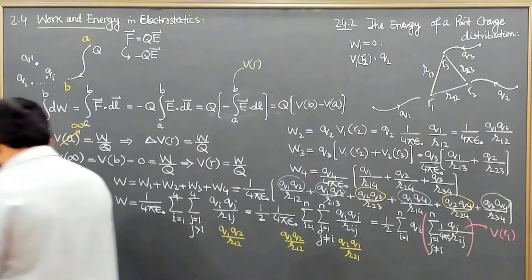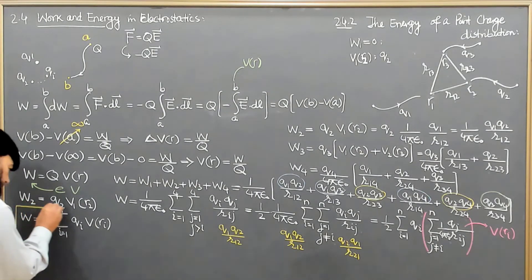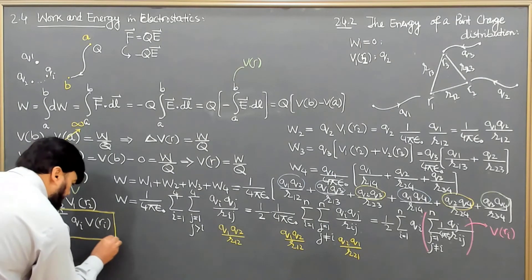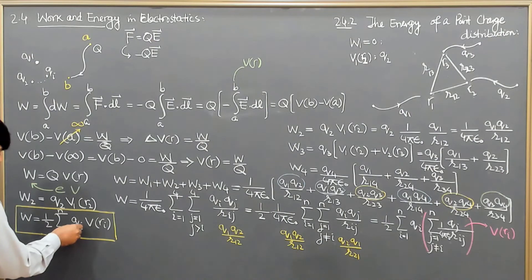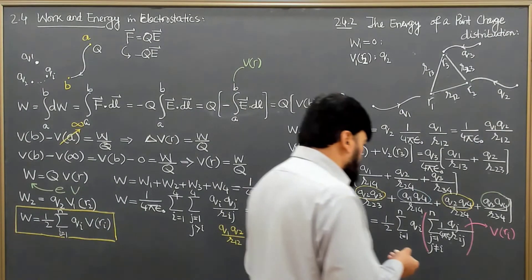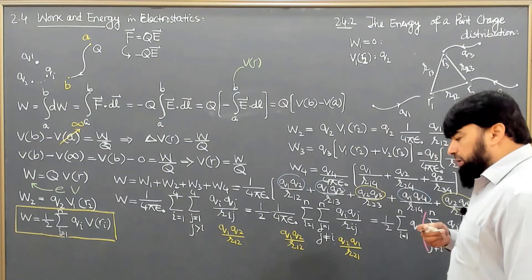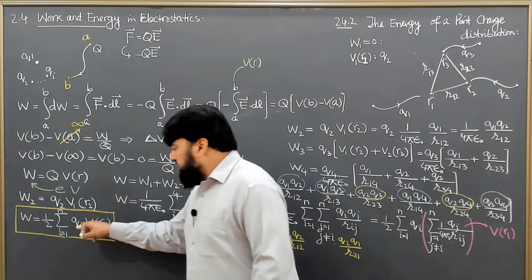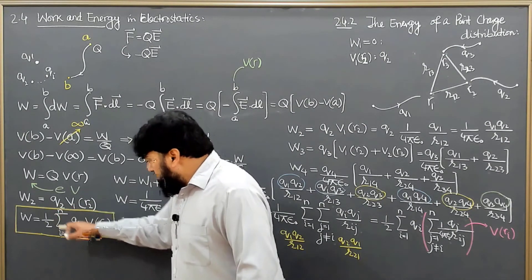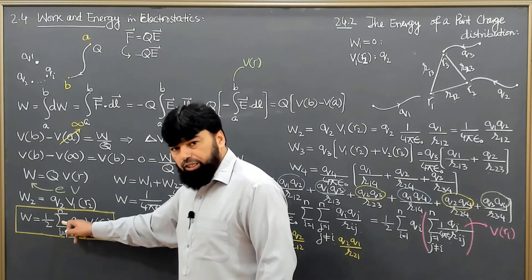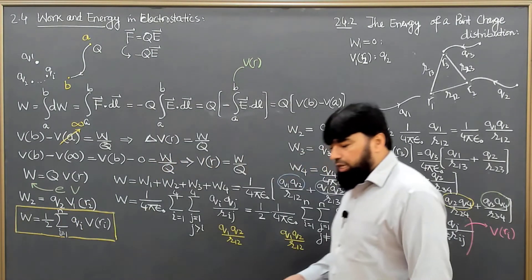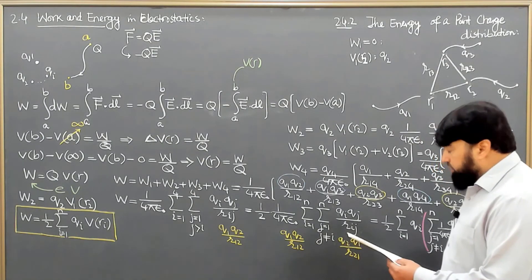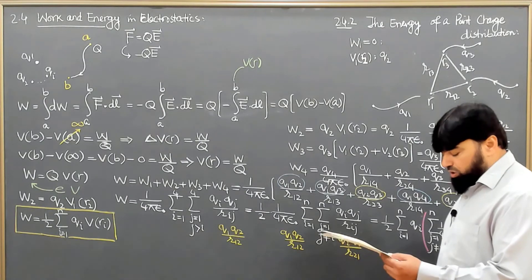This is our final relation for the work done in assembling n point charges. Now we move towards the continuous charge distribution. The charge q_i will be replaced by lambda dl for a line charge, sigma dA for a surface charge, or rho dV for a volume charge, and the summation is replaced by integration. This will be covered in the next section, 2.4.3, on the energy of a continuous charge distribution.